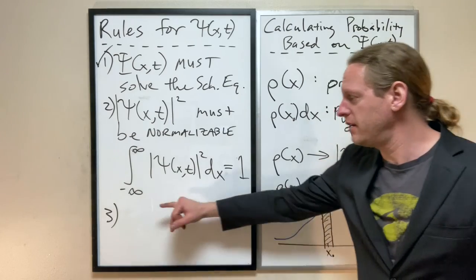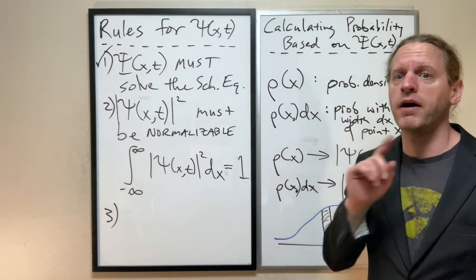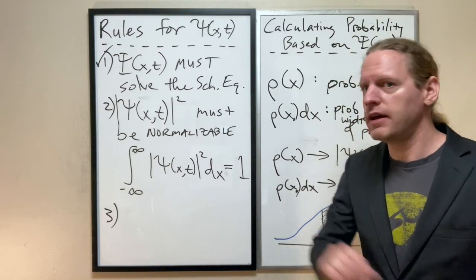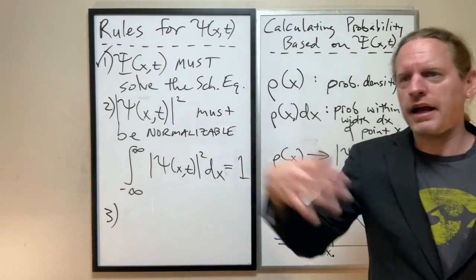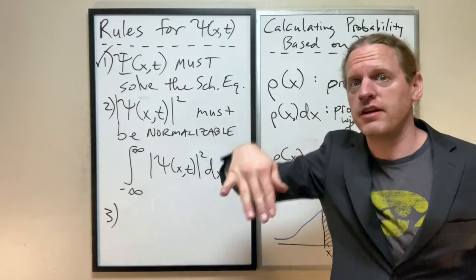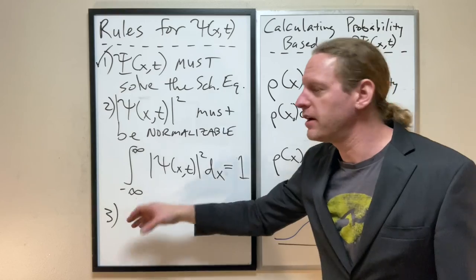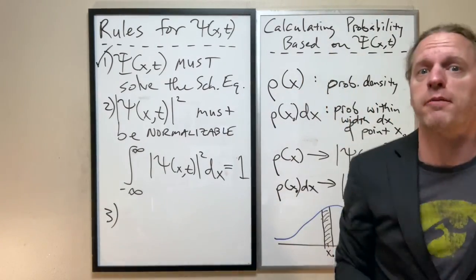but the one last remaining condition here is that psi must be continuous. It can have little, like, it can have like kinks in it which is fine, but it can't jump all over the place arbitrarily.